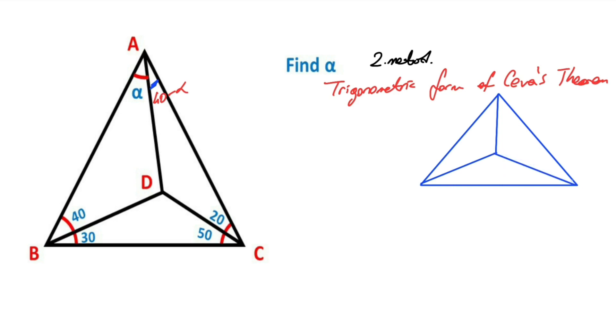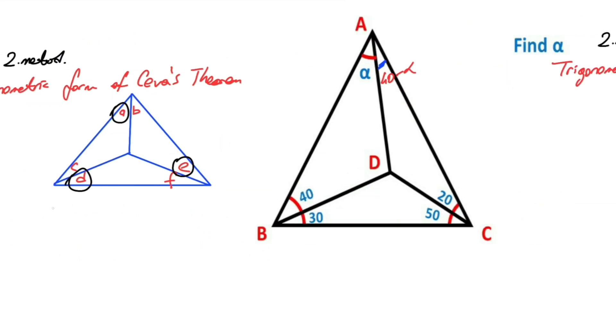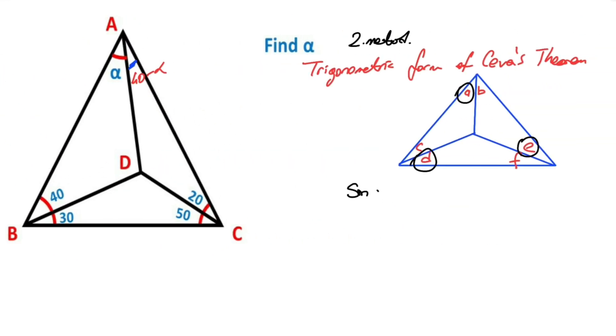And then let's call these angles a, b, c, d, and e, f. According to the trigonometric form of Ceva's theorem, sine a times sine d times sine e...